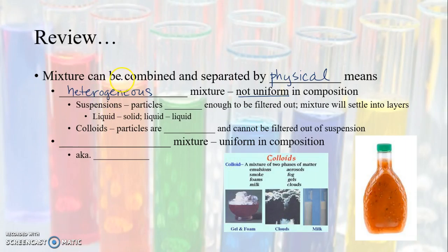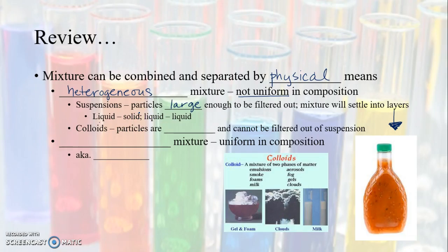Heterogeneous mixtures can be separated into a couple different types. You can have suspensions, where the particles are large enough to be filtered out. These mixtures settle into layers because the particles are heavy enough and large enough to settle. An example of a suspension would be this Italian dressing right here.